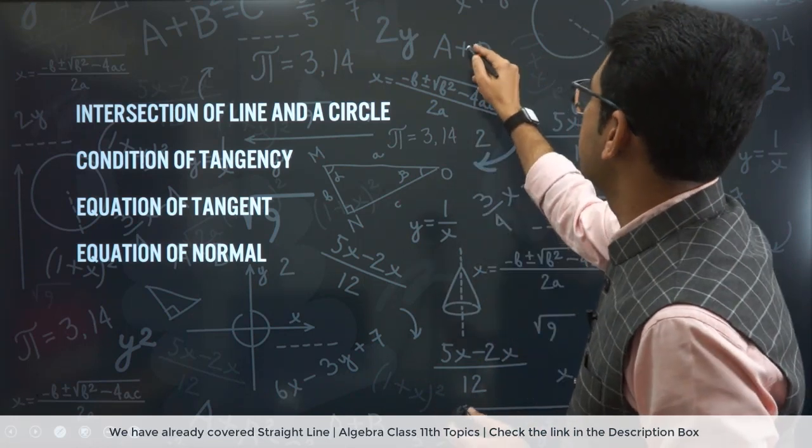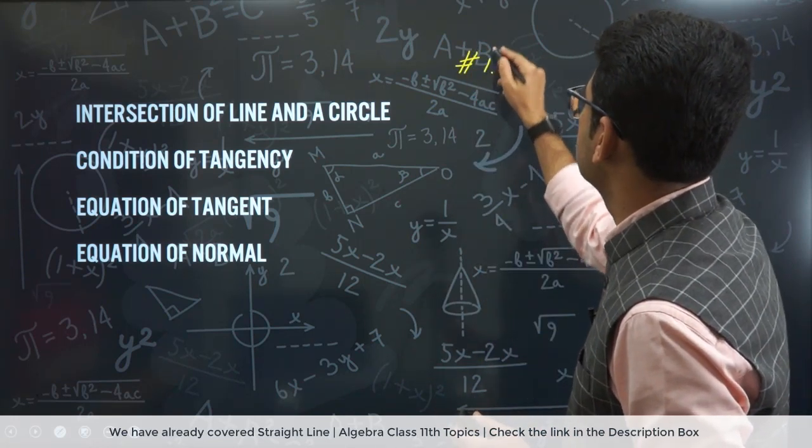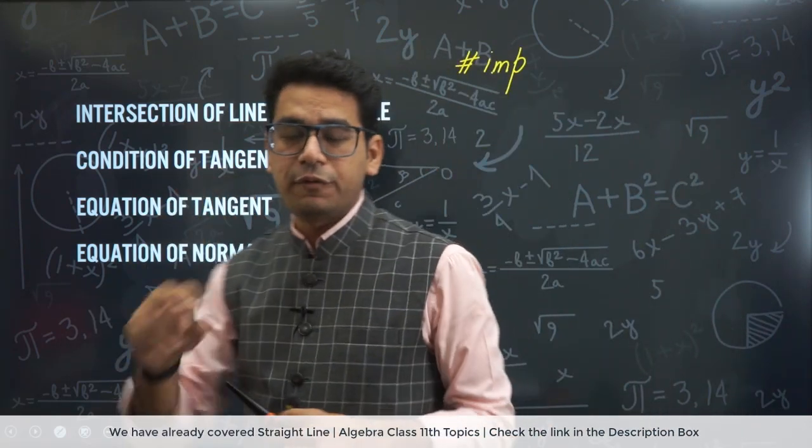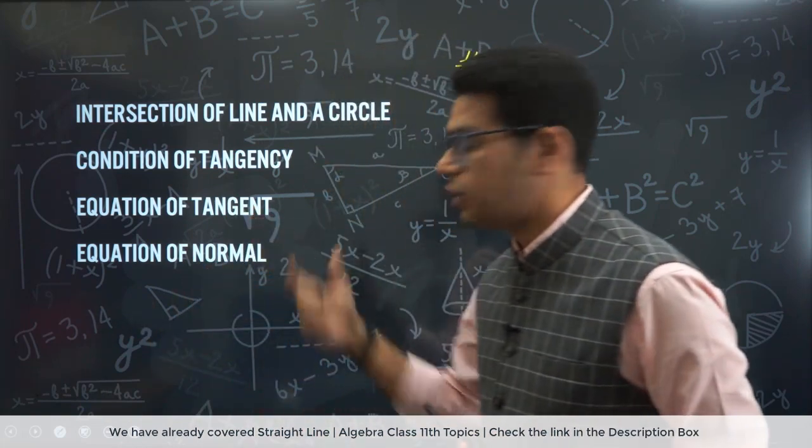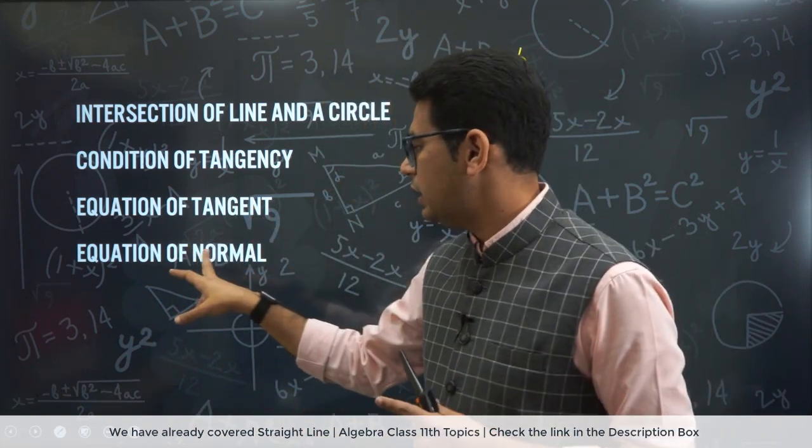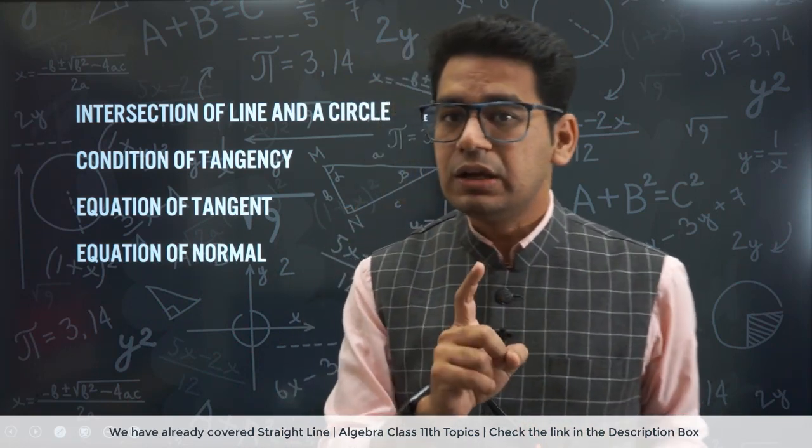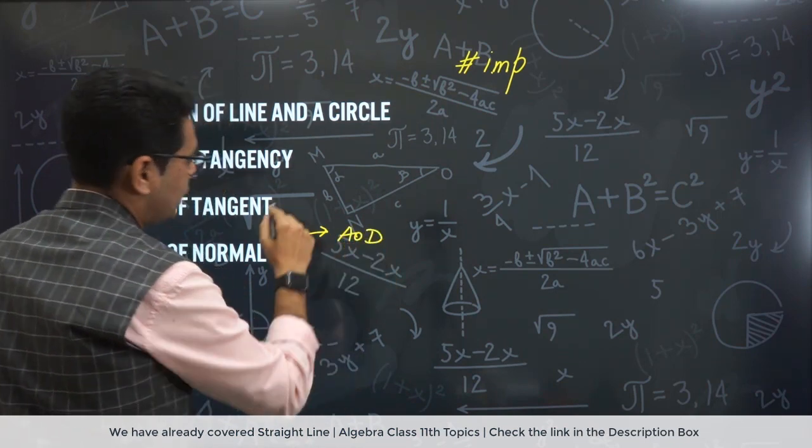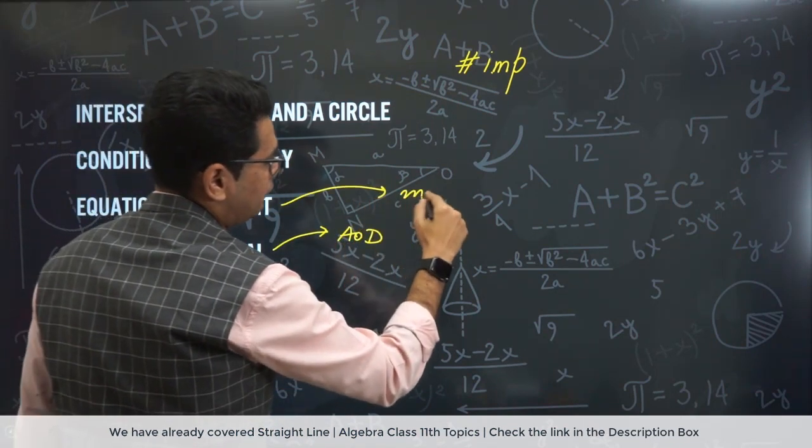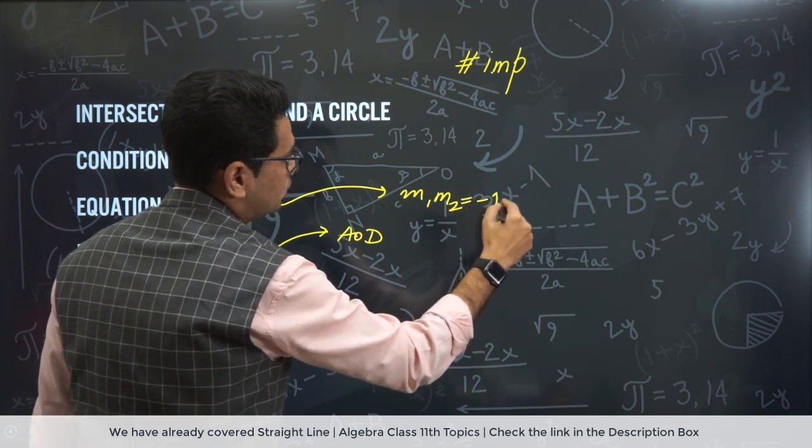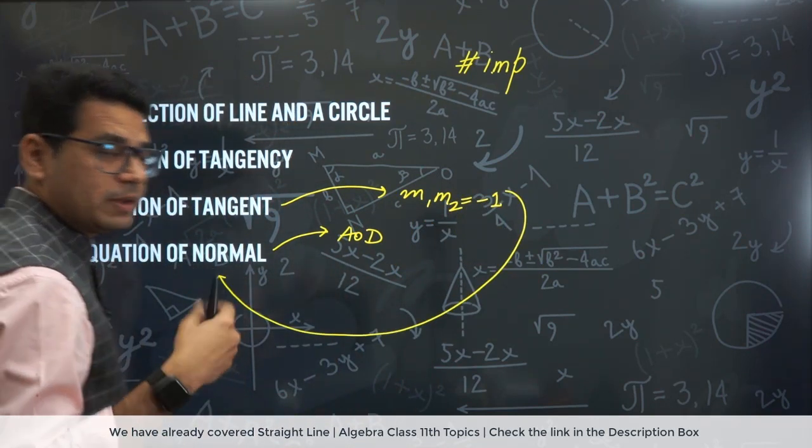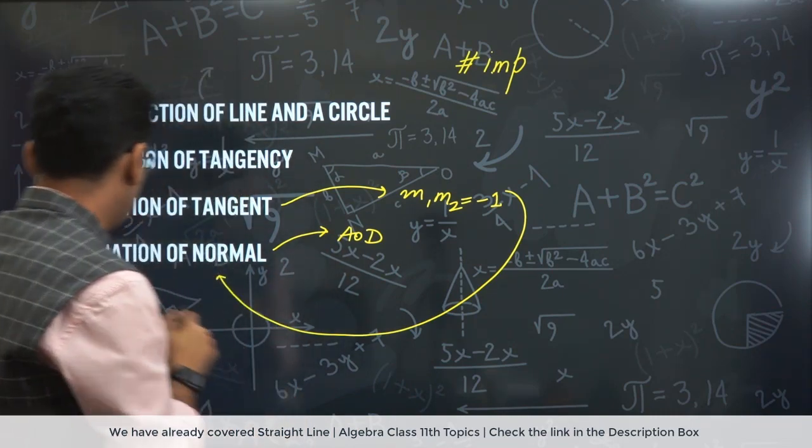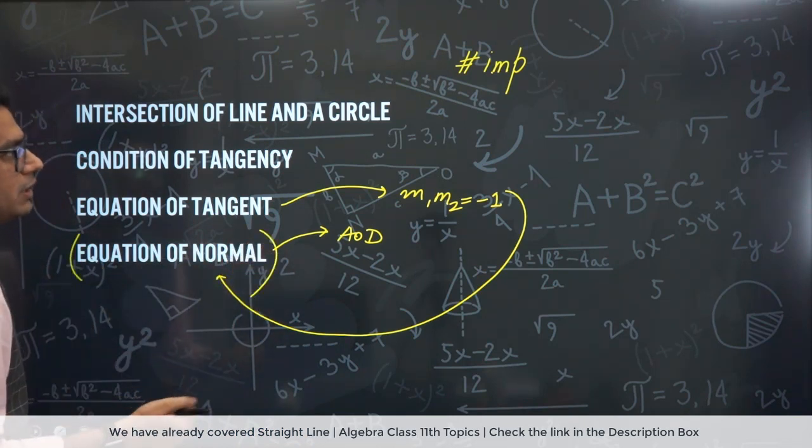Intersection of line. Now this is very important. Let's mark this as hashtag important. This is hashtag important. Condition of tangency. Offline, the line with the circle when you make a tangent. Equation of tangent in the three forms. And equation of normal. This is not mentioned. But equation of normal, we assume and work with it. Because you can derive this with the help of AOD. Why? Because if you know the slope of tangent, then M1, M2 equal to minus 1. From there you can derive the equation of the normal. Normal passes through the center of the circle. This concept which you studied in 10th. We use that. Then equation of normal, many times questions are made. No need to panic.